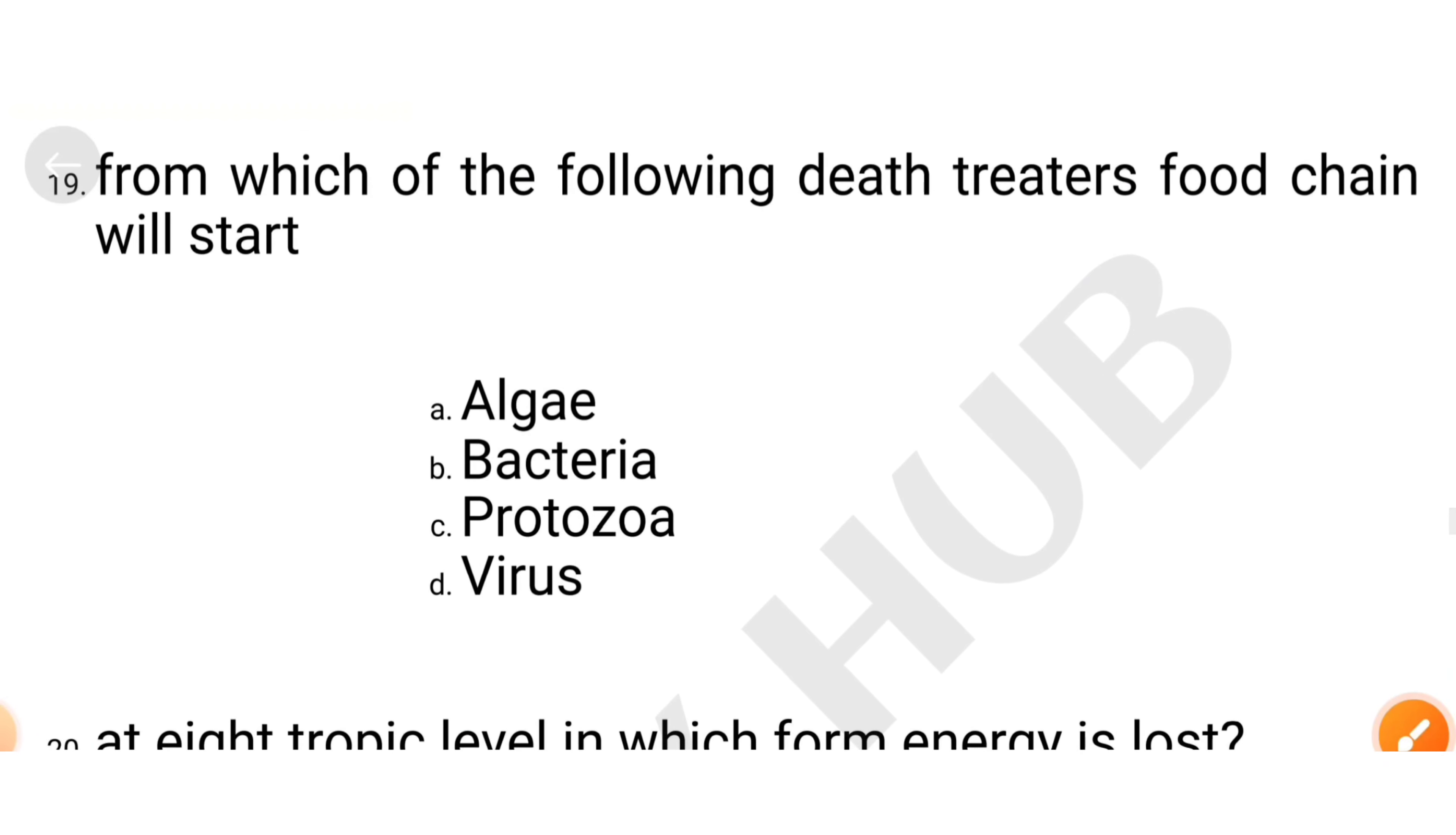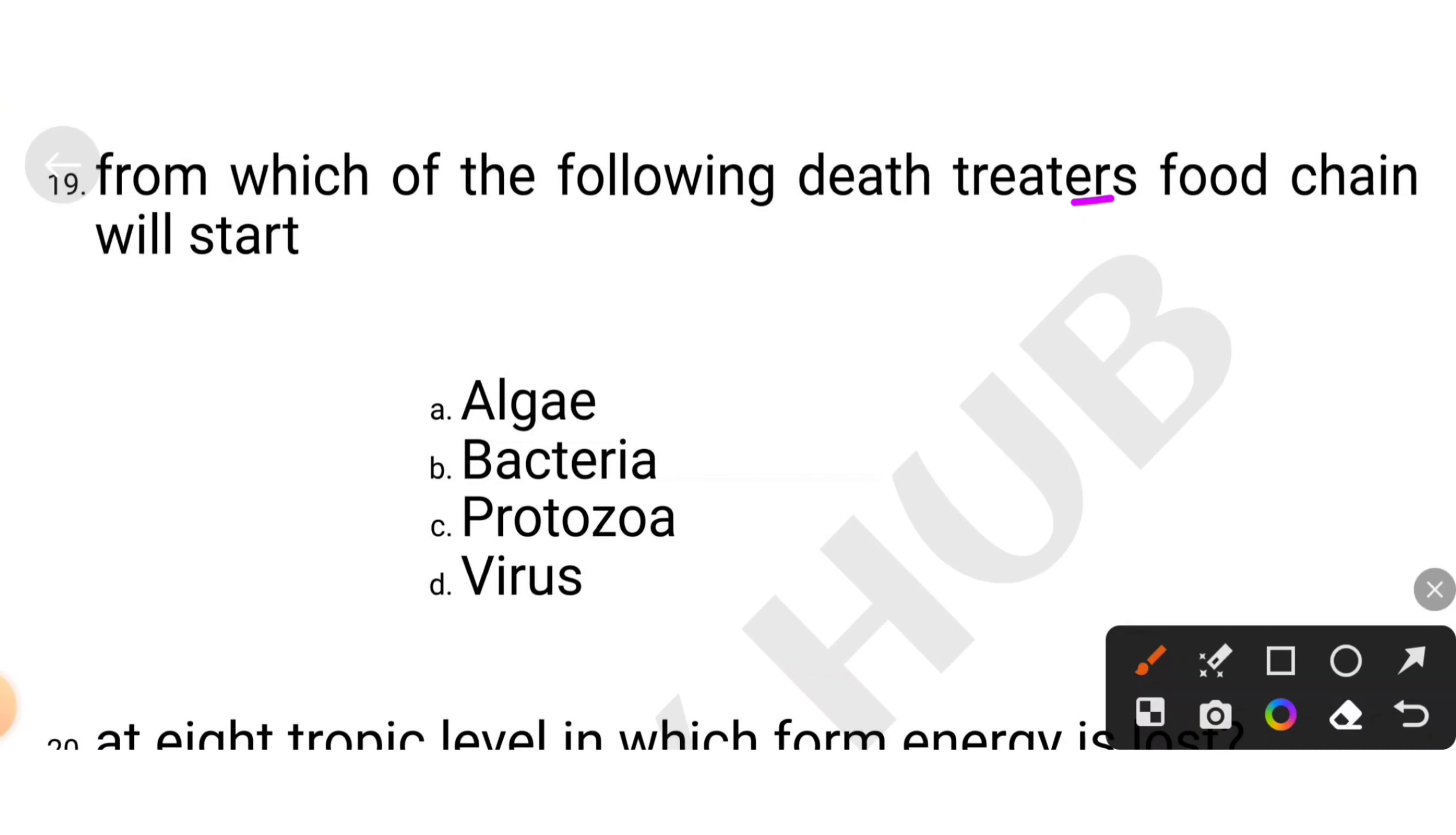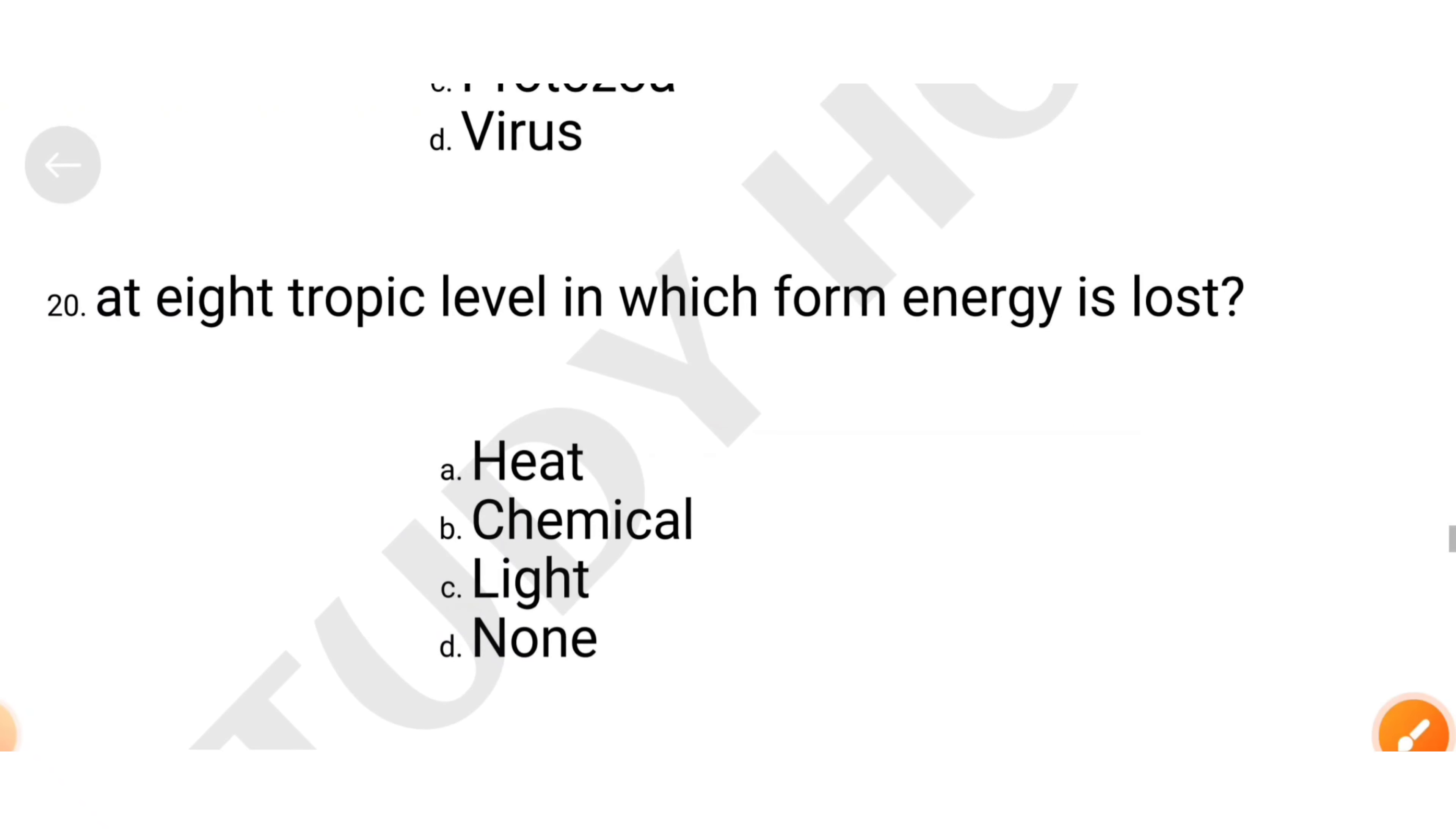From which one of the following, detritus food chain start. Where will it start? Algae, bacteria, producer or virus. So where will it be? Bacteria act first. Where will it be? Bacteria.